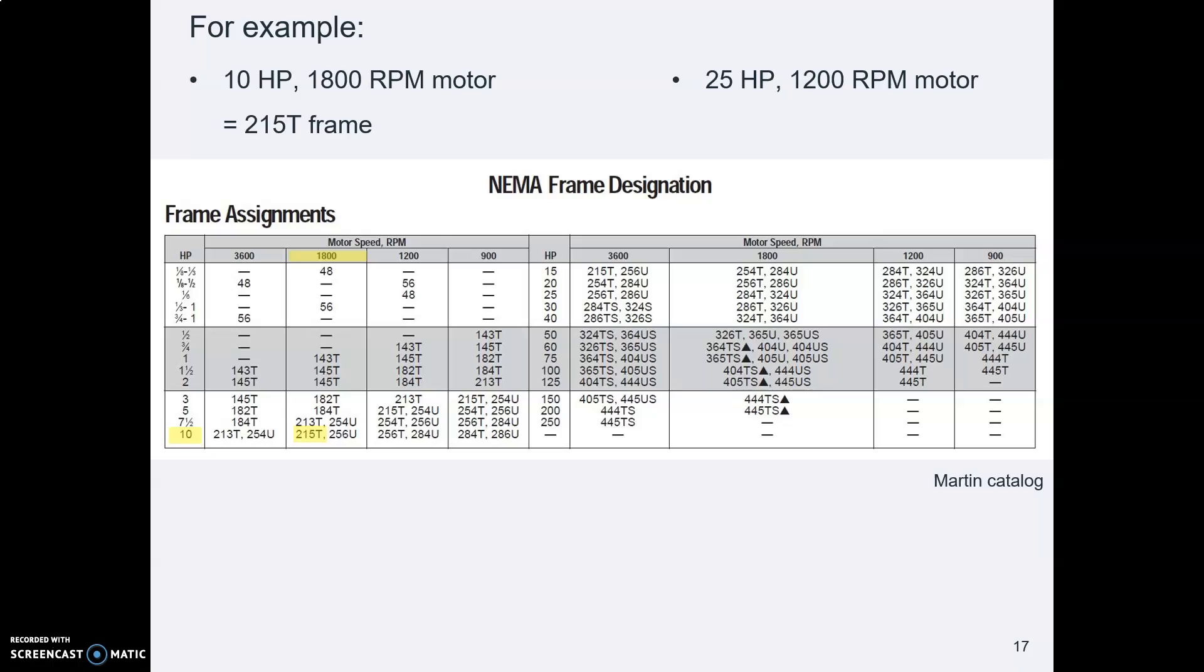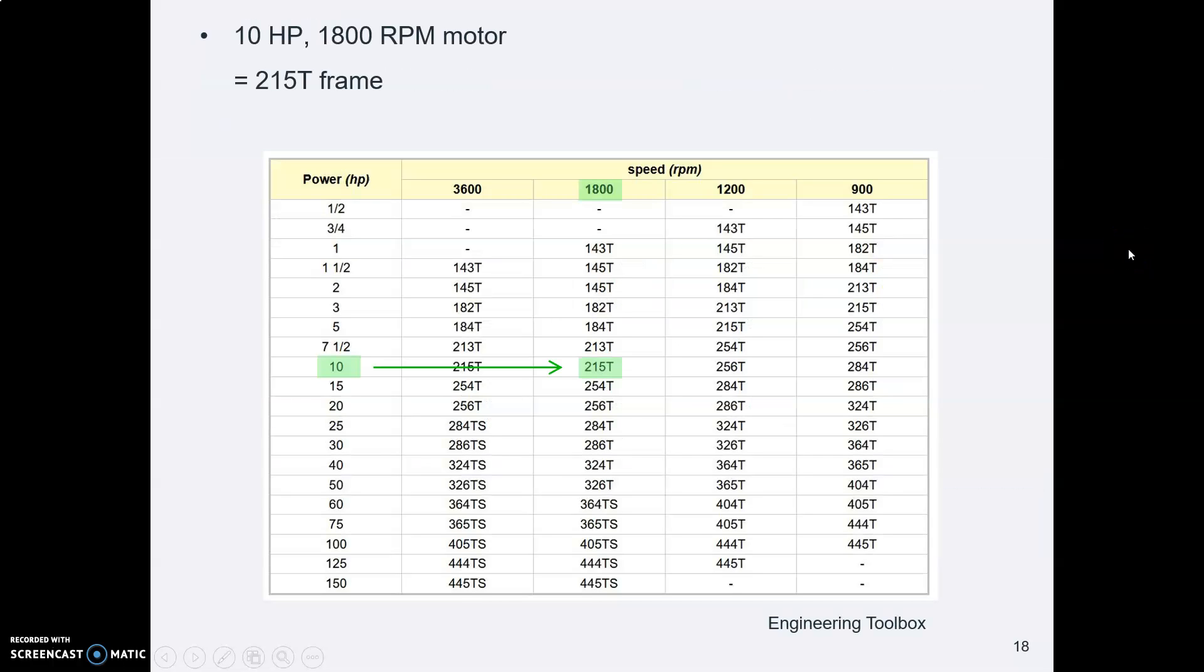What about a bigger motor, 25 horsepower, 1200 RPM? Following across 25 horsepower, 1200 RPM, that has a 324T frame size. Here's this cleaner chart. Can you see why? So a 10 horsepower, 1800 RPM, 215T, that's really clear. 25 horsepower, 1200 RPM, 324T, that's really clear. I didn't put this into a handout for you, but you can see it on the PowerPoint slides.